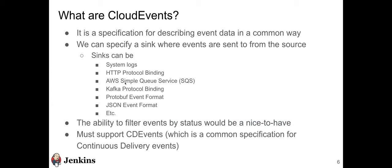Cloud Events is simply a specification for describing event data in a common way, much like JSON format. You can specify a sink where events are sent to the source. Things can include system logs, HTTP protocol binding, AWS SQS, Kafka, protobuf event format, or JSON event format. The ability to filter events by status — such as success, failed, and triggered — would be nice to have. The project must support CD Events, which is a common specification for continuous delivery events, developed by the Continuous Delivery Foundation, a group Jenkins works with.